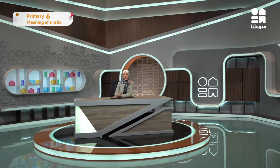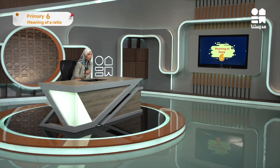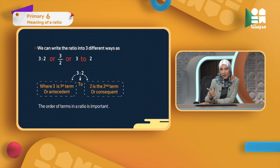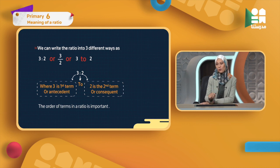Mostly, I use the ratio form or the fraction form when solving ratios — I use the first two ways. For 3 to 2, we know each part: the first number, which is 3, is called the first term or antecedent. The two dots are read as 'to'. So I have the first term — 3, then 'to', then the second term — 2.